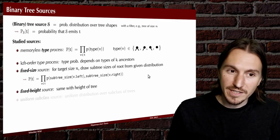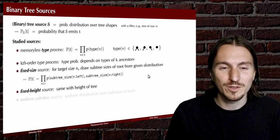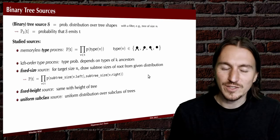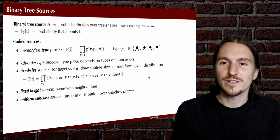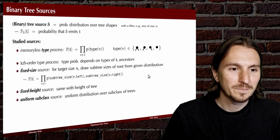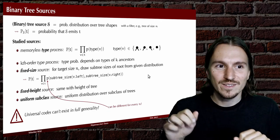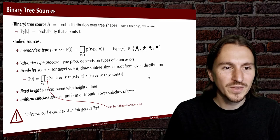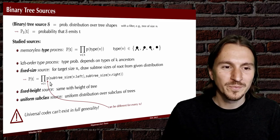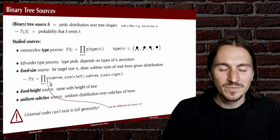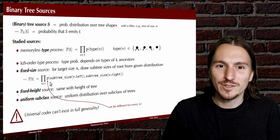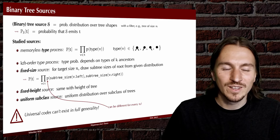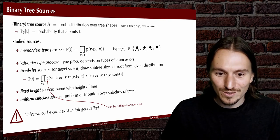We can do the same using the height of subtrees instead of the size — then the height is fixed upfront but the number of nodes is still random. The last class is just specifying some subclass of trees and drawing uniformly at random from that subclass. It's worth pointing out that unlike in the text case, these notions of sources are too general to allow any universal source code. For example, fixed-size sources allow a different distribution of splits for every n, containing too much information.